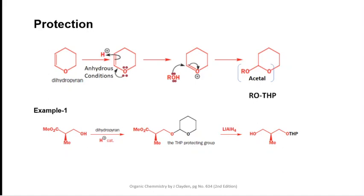As I previously mentioned, the acetal is stable under oxidation and reduction conditions — no oxidizing or reducing agents could cleave this acetal. Number two: acetal is also stable against attack by nucleophiles. So if your desired modification involves the use of nucleophiles, oxidizing agents, or reducing agents, you should preferably use THP protection for the hydroxyl group, because it is stable in all these conditions.